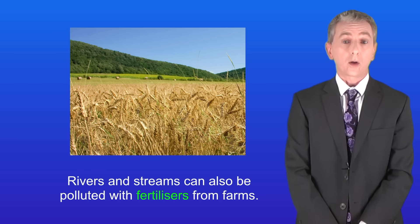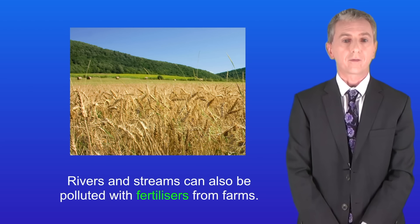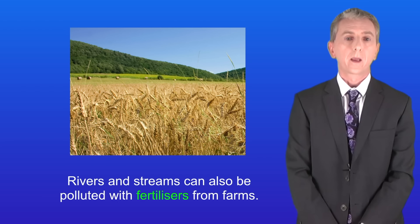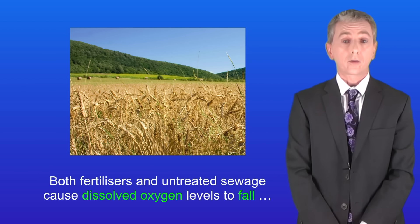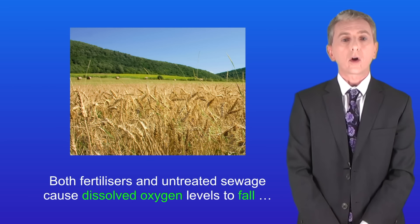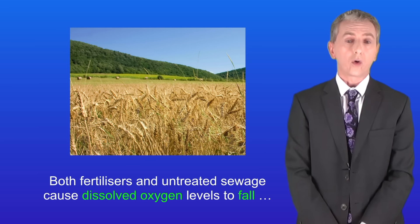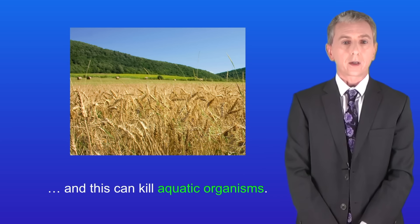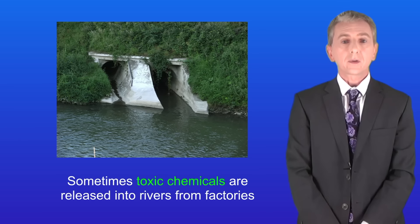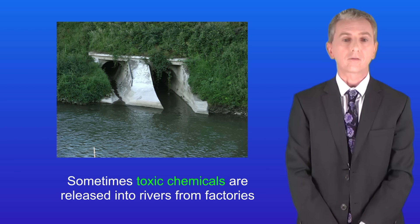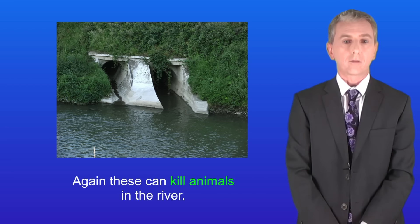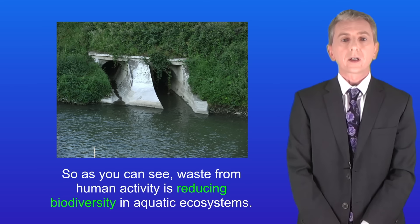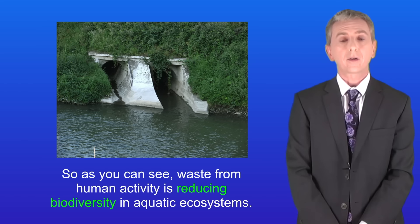Rivers and streams can also be polluted with fertilizers from farms. Both fertilizers and untreated sewage cause dissolved oxygen levels to fall and this can kill aquatic organisms. Sometimes toxic chemicals are released into rivers from factories and again these can kill animals in the river. So as you can see waste from human activity is reducing biodiversity in aquatic ecosystems.